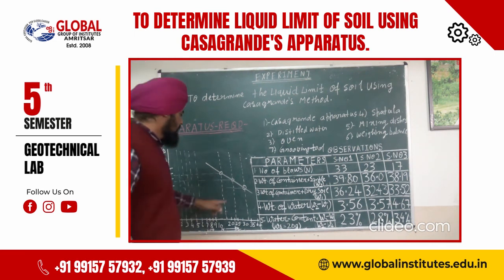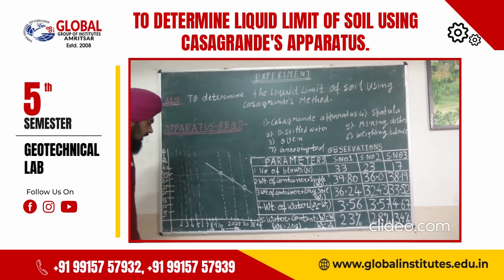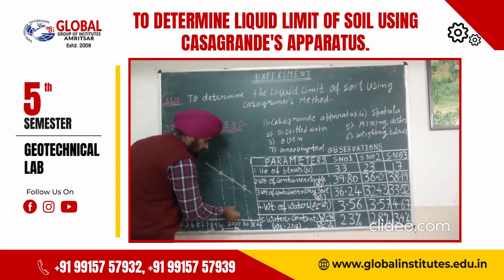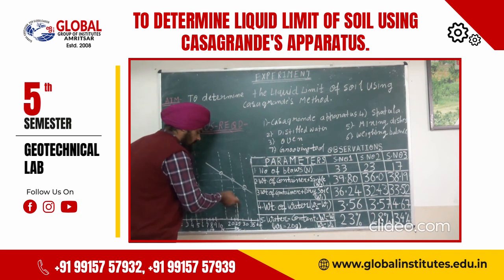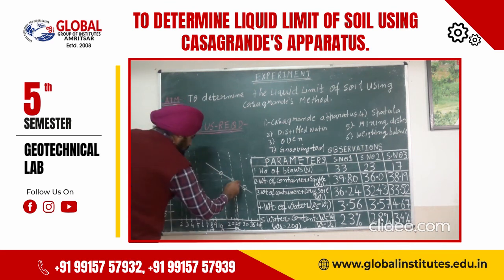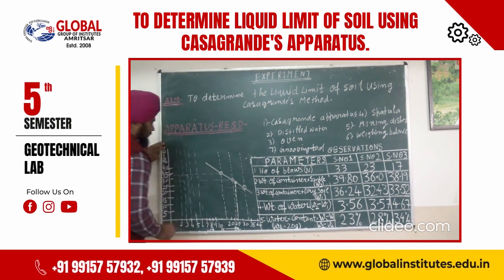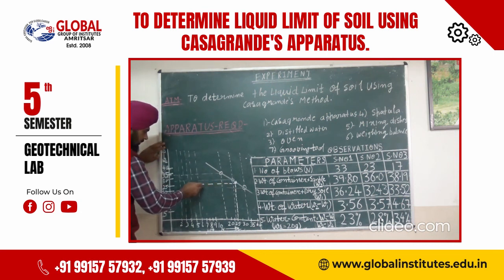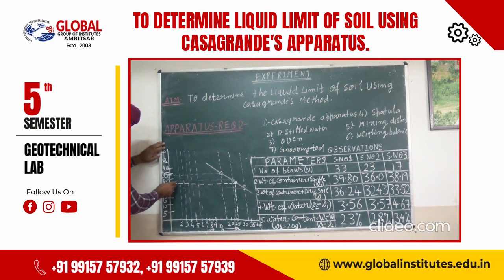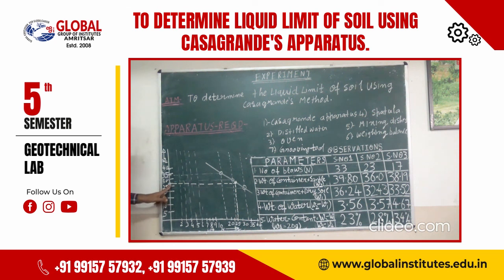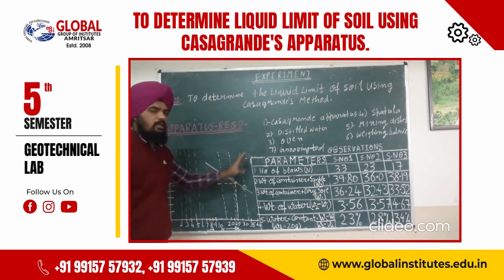The liquid limit is defined as the water content at which the soil requires 25 blows to close the groove. I draw a vertical line from 25 on the x-axis, which intersects the best-fit line. From that intersection point, I extend a horizontal line to the y-axis. This gives a value of approximately 28%, which represents the liquid limit of the soil.